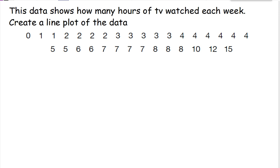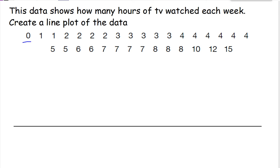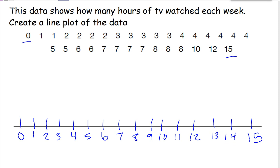When we're dealing with quantitative data, it often helps to show the numbers in a line plot like we saw earlier. So this data shows how many hours of TV were watched each week. To create a line plot, the first thing I do is make my straight line, and then I have to divide that line into sections. I have numbers from 0 to 15, so I need to start at 0 and count up to 15: 0, 1, 2, 3, 4, 5, 6, 7, 8, 9, 10, 11, 12, 13, 14, 15. I'm going to go ahead and write those numbers in. To make a line plot, I'm going to use a mark to show each of these numbers. So I only have one 0, so I'm going to put an X above the 0.